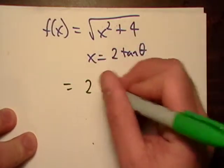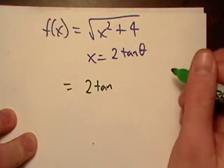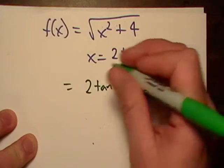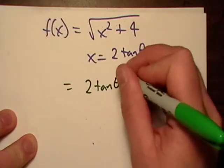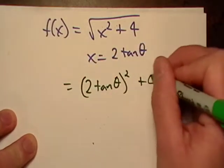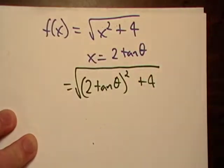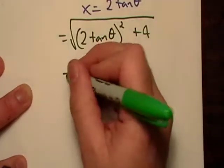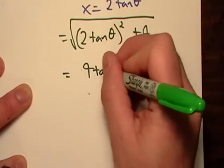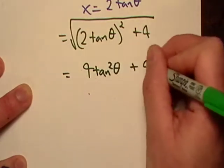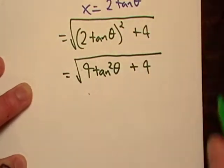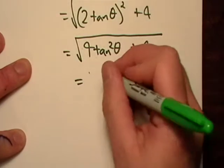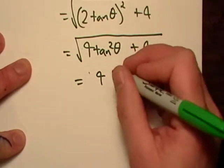If we substitute right off the bat, we're faced with this expression, which is nothing more than 4 tangent squared theta plus 4. And then we'll factor out the 4.